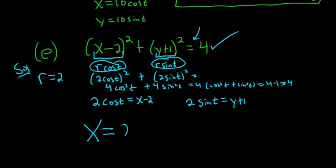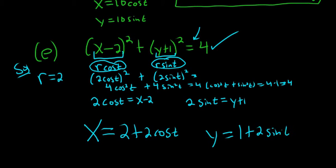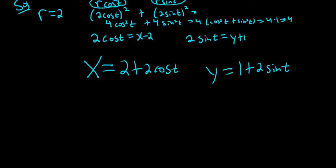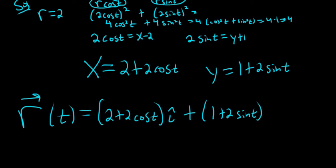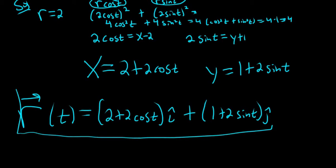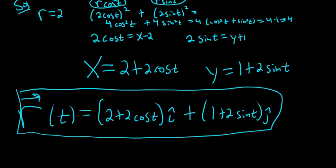Now just solve for x and y. From 2 cosine t equals x minus 2, we get x equals 2 plus 2 cosine t. From 2 sine t equals y plus 1, we get y equals negative 1 plus 2 sine t. So the vector-valued function is r(t) equals (2 plus 2 cosine t) i-hat plus (1 plus 2 sine t) j-hat.